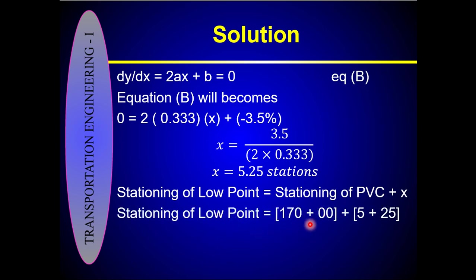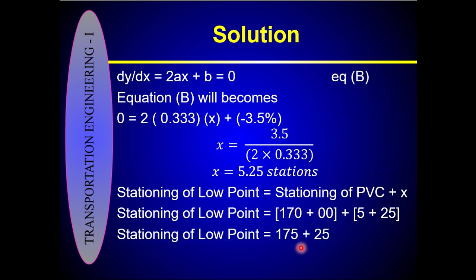The stationing of the lowest point is 170 + 5.25 stations (since 525 feet = 5 stations and 25 feet), giving a station of 175+25.